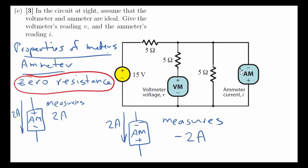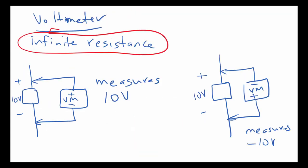For the ammeter, it appears as a short circuit, and what's going to happen is that it effectively short-circuits the 5-ohm resistor — it's as if that 5-ohm resistor is not there. When we take the ammeter reading, it will be the current flowing through it as a short circuit across the circuit without that 5-ohm resistor. We have to pay attention to the polarity of the ammeter and the voltmeter to make sure we get the correct measurement.